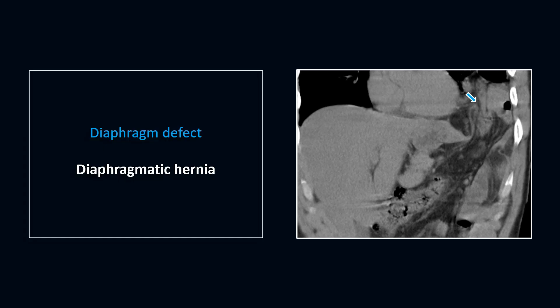Diaphragmatic rupture and hernia can be seen in motor vehicle accidents, and the tear tends to cluster about the junction between the central tendon and the muscular portion of the diaphragm. It is usually seen on the left. The diagnosis is important because if you miss it, there can be delayed visceral herniation with strangulation. CT with sagittal and coronal reconstructions has a positive and negative predictive value of about 80%.